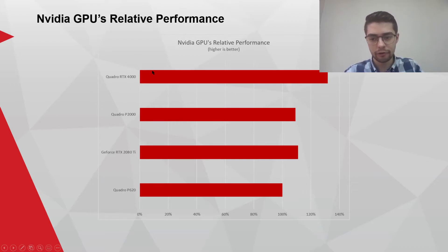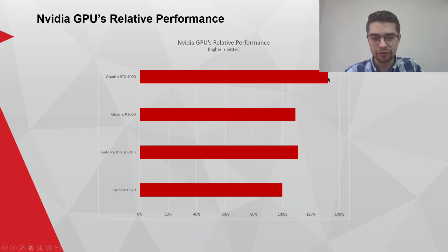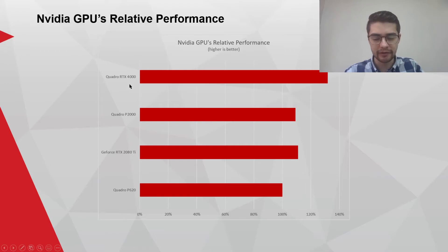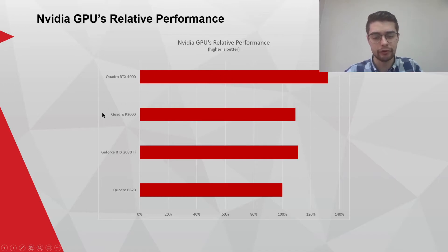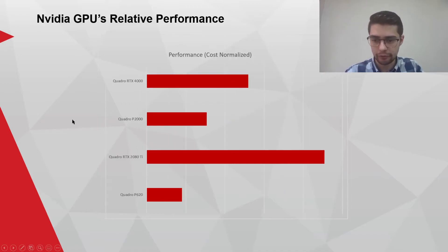Lastly, the Quadro RTX 4000 — this is generally what we recommend for large assemblies or if you want to do any rendering. It's an amazing card, coming in at about 18 to 20,000 Rand, and it performs really well, especially with large assemblies. I'll show you more of that later on.